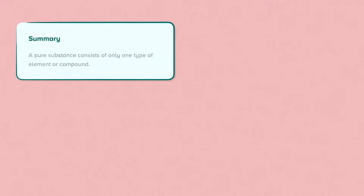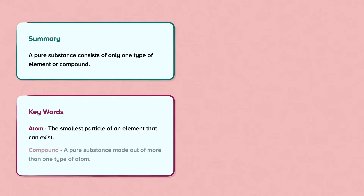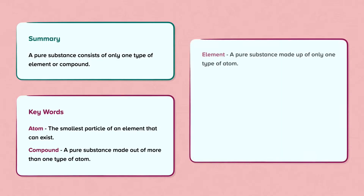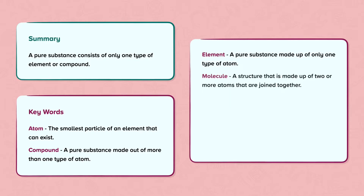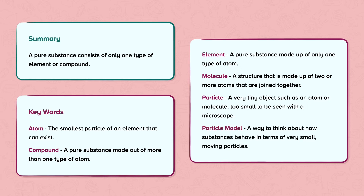In summary: a pure substance consists of only one type of element or compound. Atom — the smallest particle of an element that can exist. Compound — a pure substance made out of more than one type of atom. Element — a pure substance made up of only one type of atom. Molecule — a structure that is made up of two or more atoms that are joined together. Particle — a very tiny object such as an atom or a molecule, too small to be seen with a microscope. Particle model — a way to think about how substances behave in terms of very small moving particles.